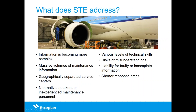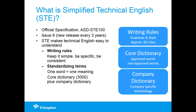What is Simplified Technical English? It's an official specification with approximately 60 writing rules telling you to keep things simple, be specific, and be consistent. Simple means one topic per sentence. Specific means, for example, don't say 'the pressure must be okay' — what does okay mean? Don't stack boxes too high without saying whether it's two or five boxes. And consistent means don't call something 20 different names — use one name throughout. One word can only have one meaning.